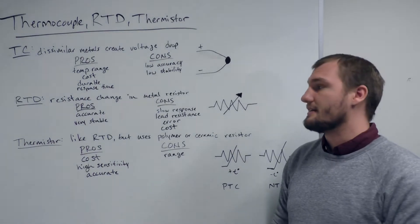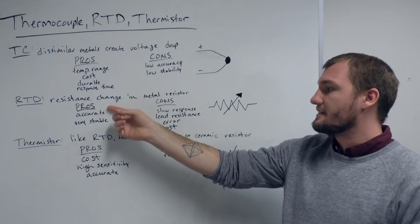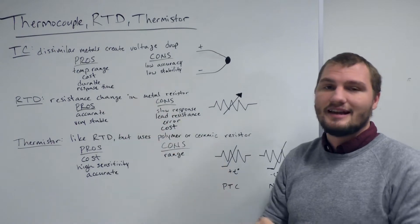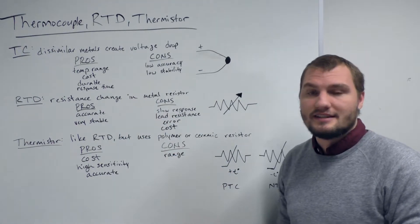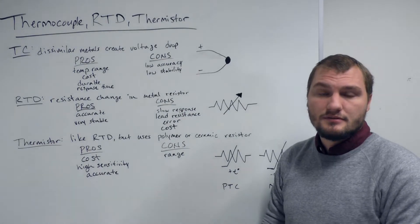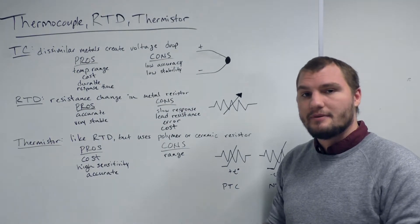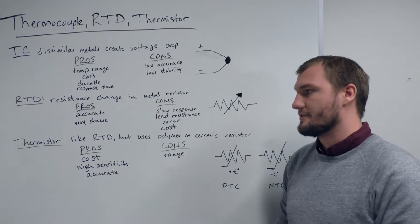An RTD, on the other hand, is a device that measures the resistance change in a calibrated metal resistor. A typical version of an RTD would be a PT100, which is a platinum wire calibrated to be at exactly 100 ohms at zero degrees Celsius.